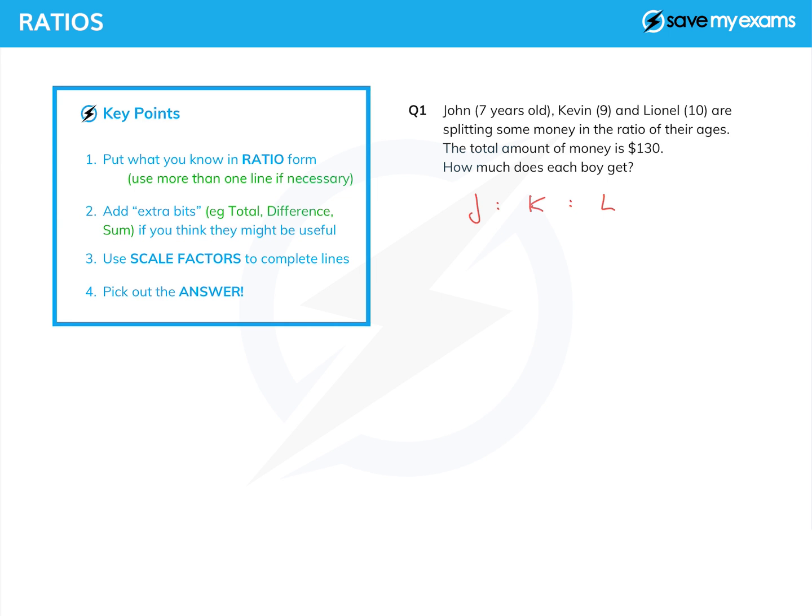Well, let's write down all of that information in ratio form. So John to Kevin to Lionel, well, looking at their ages, that is 7 to 9 to 10. And then looking at money, well actually we're given the total amount of money, so we need another thing here: total, and we're told that that is $130.